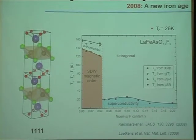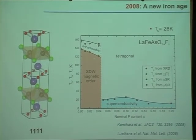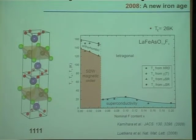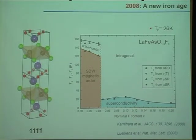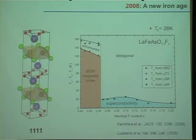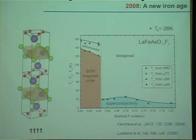Following what Antoine Georges was saying yesterday about eras in history being named after a compound or a metal, we could consider 2008 as the framework of superconductivity as a new iron age. Here Hosono and his group found a new material which, from structure, looks very similar to the high-TC cuprates. We have layers of iron and arsenic separated by layers of oxygen and lanthanol. The phase diagram they found for this material also looks very similar to the high-TC cuprates, with a fundamental difference.